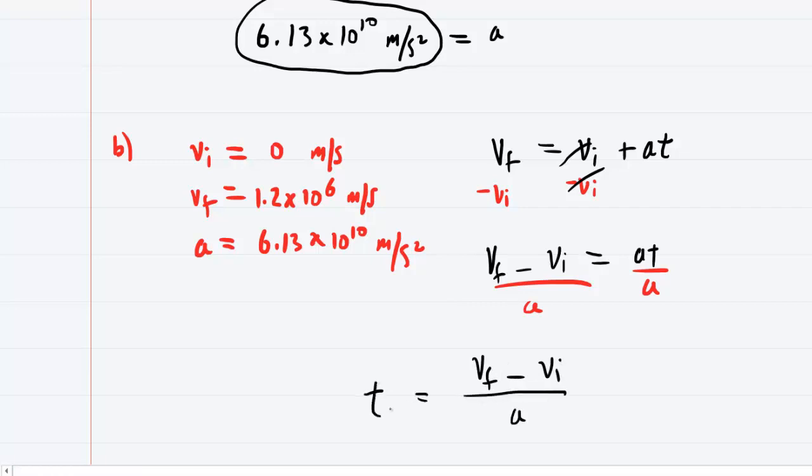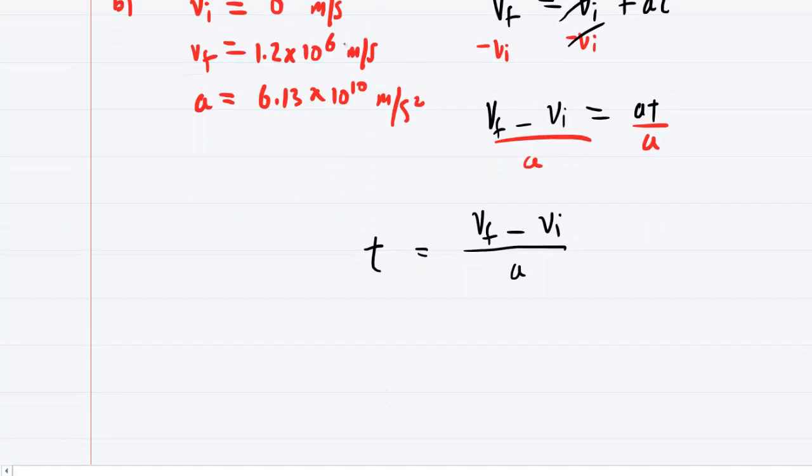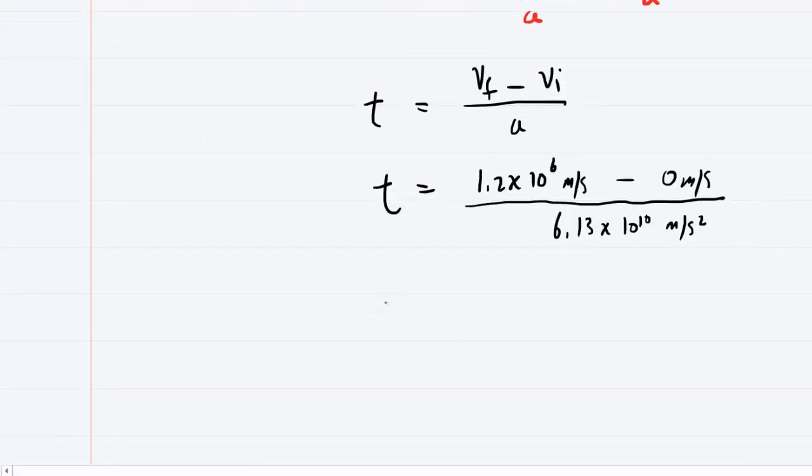We'll just put the time on this side. Let's go ahead and plug in the known values that we outlined in red above. When you punch this in your calculator, you're going to get about 1.96 times 10 to the minus five seconds. If you want to convert that to microseconds, you can say that one microsecond is 10 to the negative sixth seconds. And so when you multiply the 1.96 times 10 to the negative 5 times 1 over 10 to the negative 6, you're going to get about 19.6 microseconds.